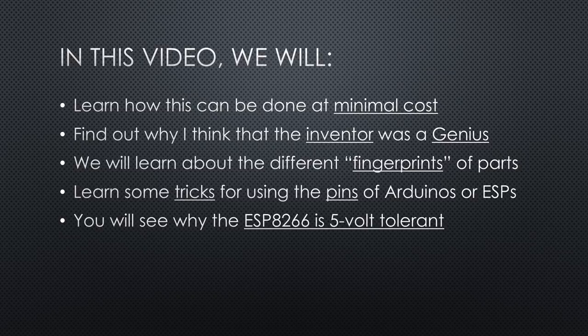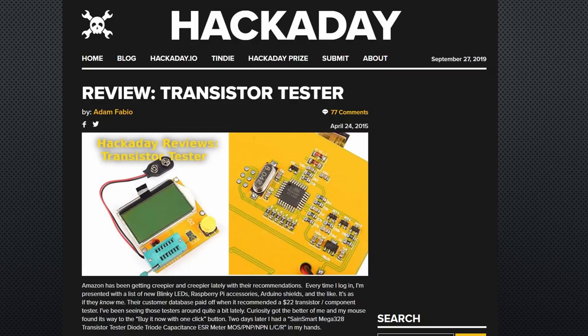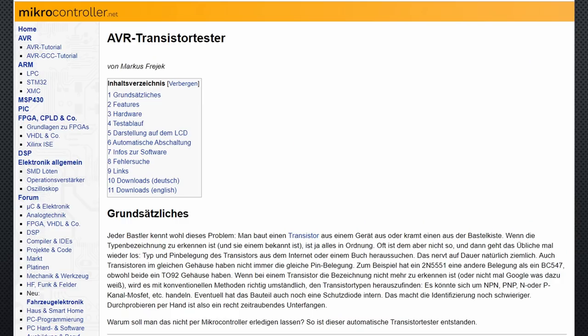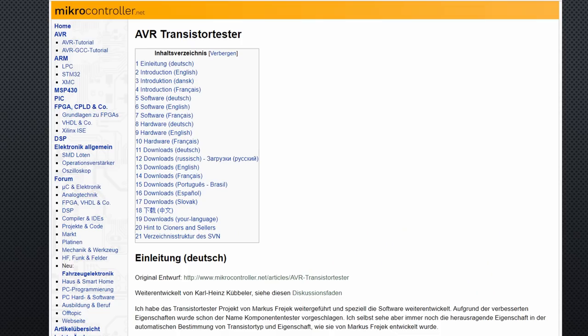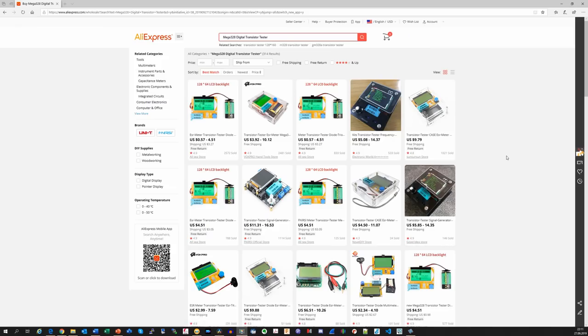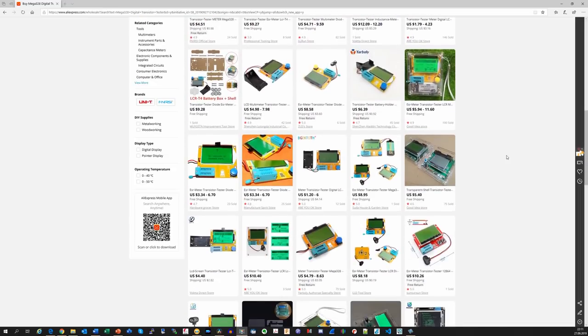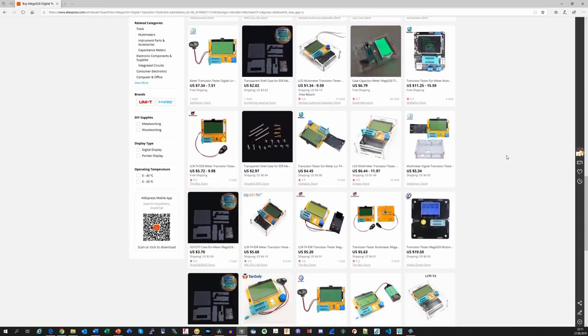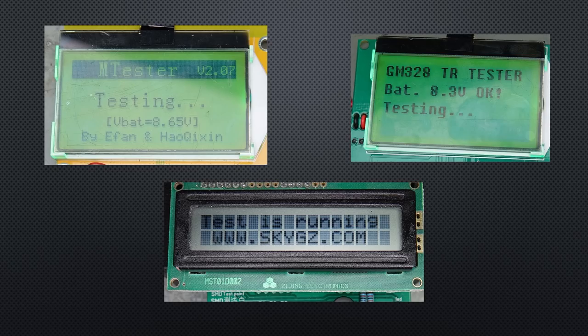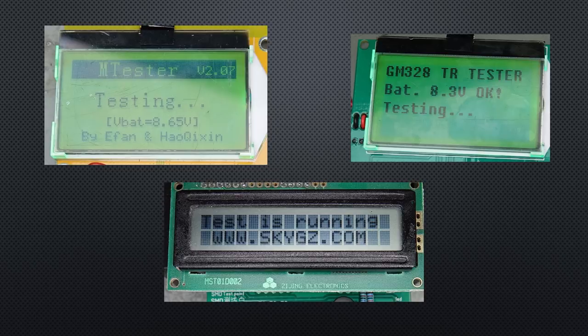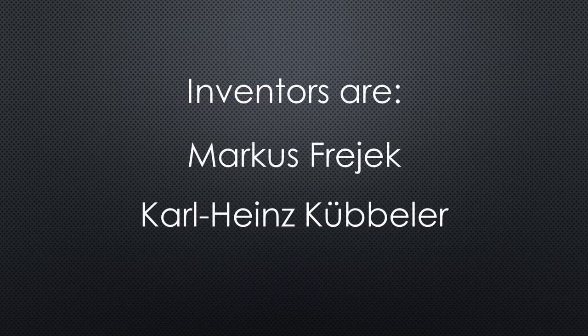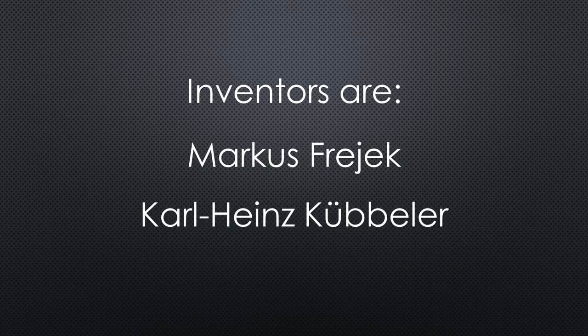Let's start with history. According to an article on Hackaday, Markus Freyek had the idea and did the first implementation of such a tester. Then Karl-Heinz Küppeler and others enhanced the design as well as the software. In the end, the Chinese started to mass-produce the devices. This is why you find many different implementations, all based on the original design and software. But as quite often, Markus and his friends do not get mentioned. This is bad behavior of the Chinese. After this video, at least you know the history.